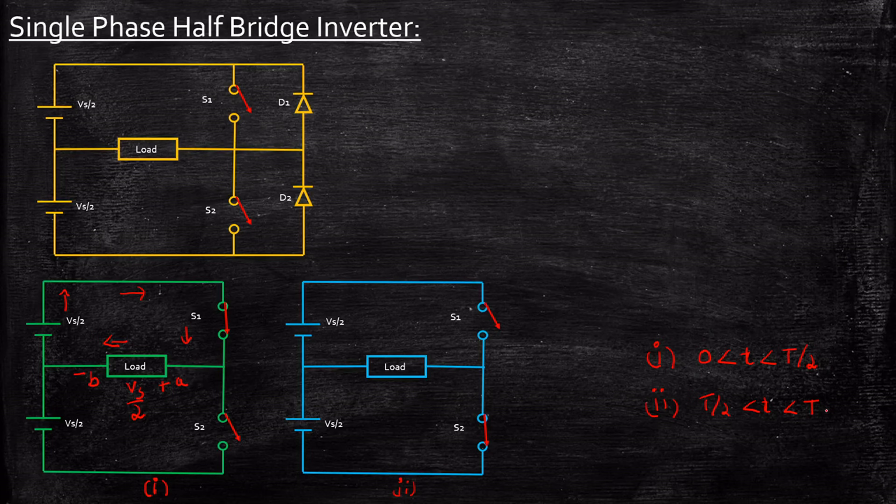Now from T/2 to T, I will turn off S1 and turn on S2. This should be done in such a way that both should not be conducting at the same time—if that happens, this will be a short circuit. So I'll turn off S1, which was conducting previously, and turn on S2.